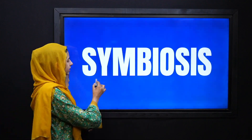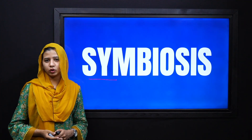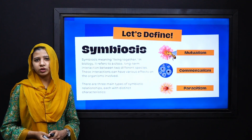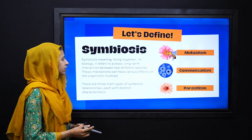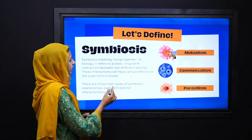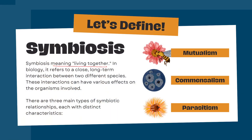Next, we move to our next relation, that is symbiosis. Dear students, symbiosis means 'living together.' It is a type of interaction between two different species and it can be of different kinds. It has three types: first is mutualism, then commensalism, and then parasitism.